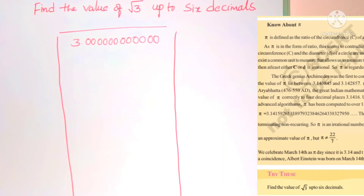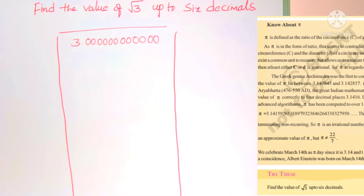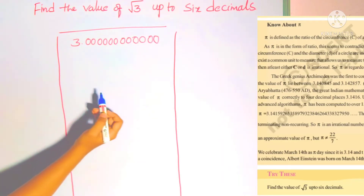Hello students, welcome to my channel. Today we are going to see the solution for this problem on page number 10 of our first chapter, Real Numbers. The problem is: find the value of root 3 up to 6 decimals. So here we have to find out the square root of 3 value up to 6 decimal places.